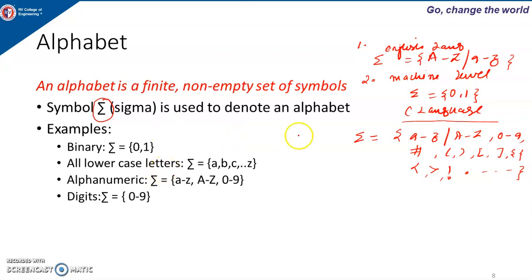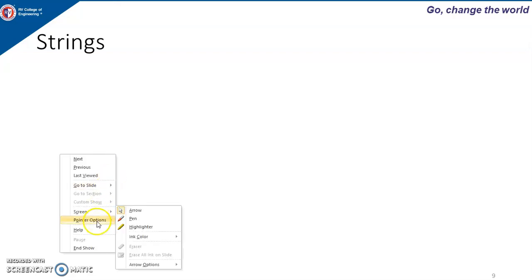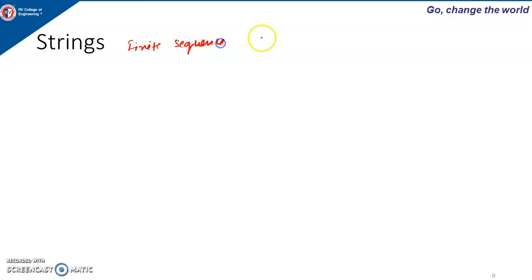So examples are: binary uses 0 and 1 as symbols; lowercase letters; alphanumeric and digits. These are the alphabets, and the sigma symbol is used to represent the alphabet. Next is string. A string is a finite sequence of symbols from the alphabet — that is, from sigma.